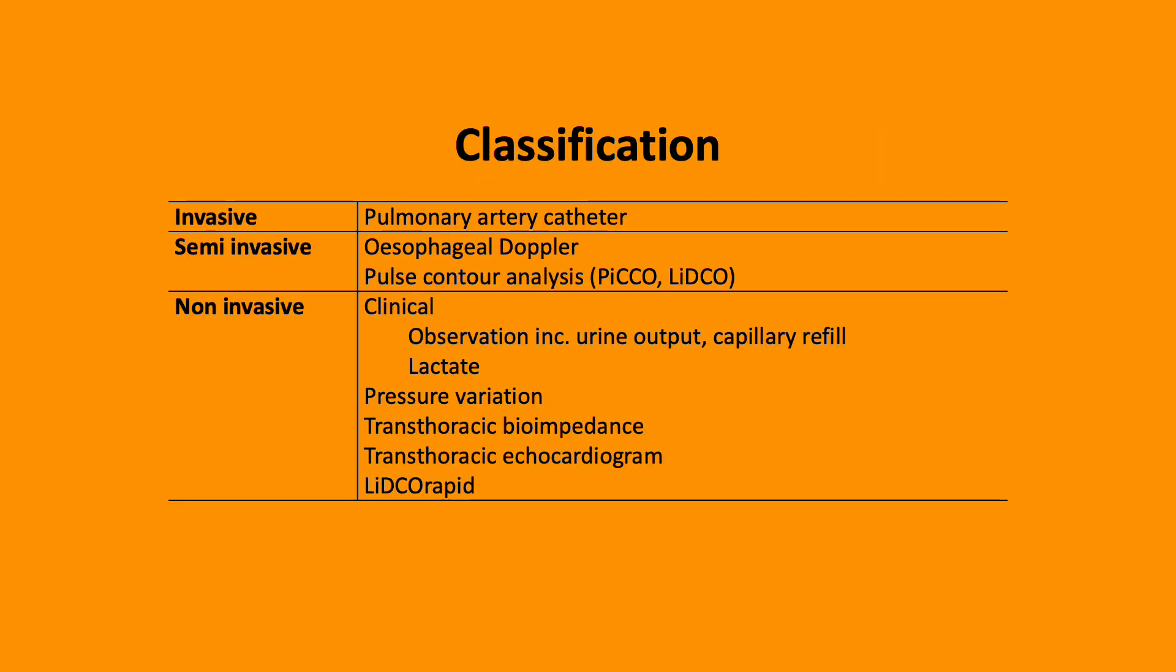The ways to assess cardiac output can be classified into invasive, semi-invasive, and non-invasive. Invasive, the gold standard is the pulmonary artery catheter. Semi-invasive is the esophageal Doppler and pulse contour analysis via the LiDCO which requires lithium dilution and venous and arterial cannula.